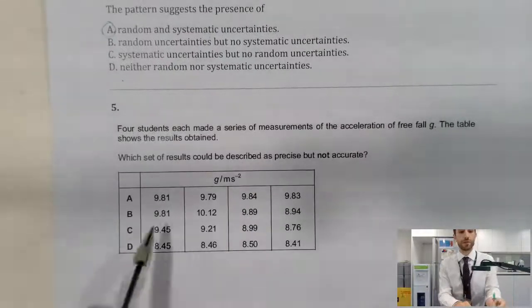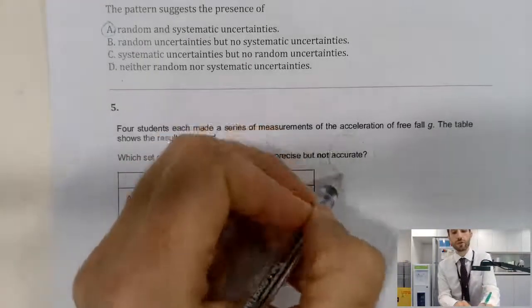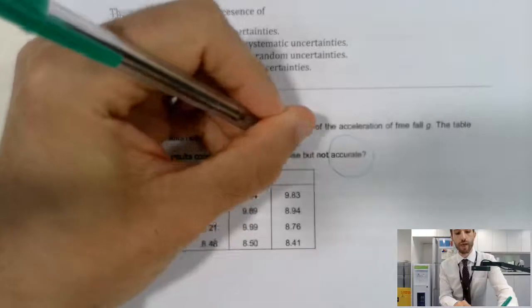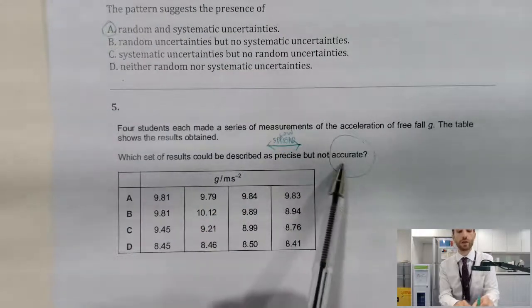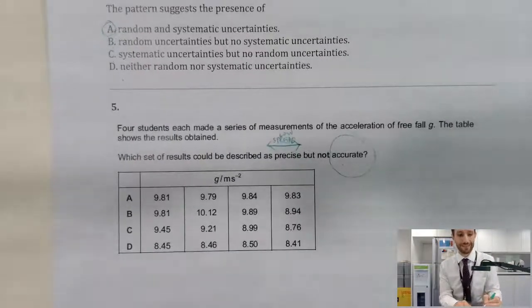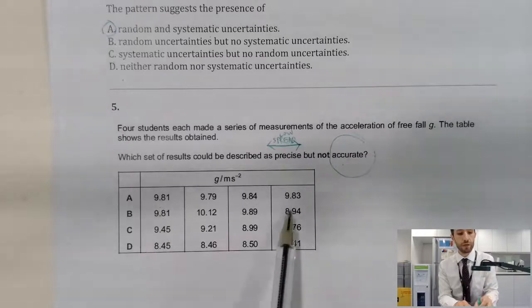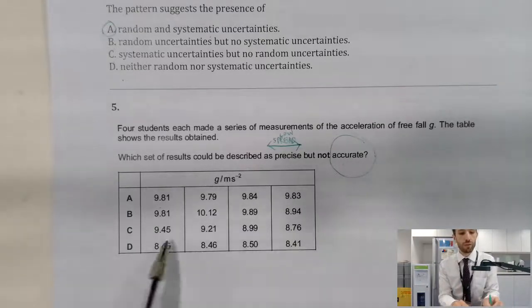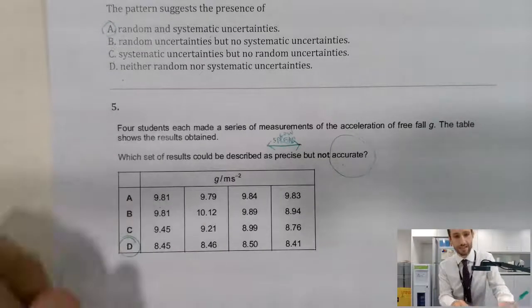Let's look at this one. Students making values of, reading values of g, we expect 9.81. We're looking for something which is not accurate, but precise. So in precise, we've got a low spread. However, we want values which are away from the value we expected. So we look at our data here. Here, we've got very nice accurate data. It's very close to 9.81. Here, we've got some above and some below and so therefore, there's quite a wide spread there. Here, we've got quite a wide spread and we are very far away from our 9.81. And then down at the bottom, we've got some numbers which are very, very close together, but they are clearly not correct and that is why D is the answer here.